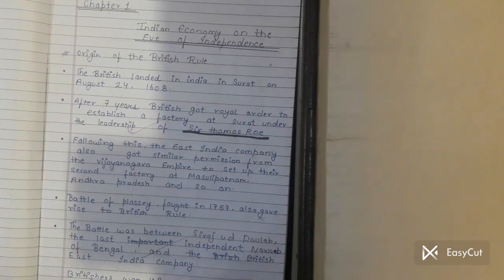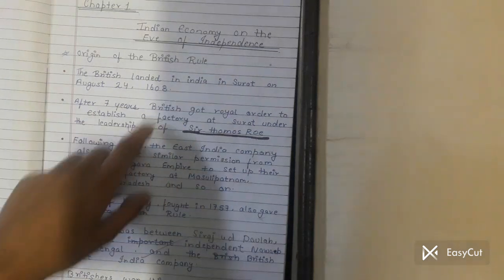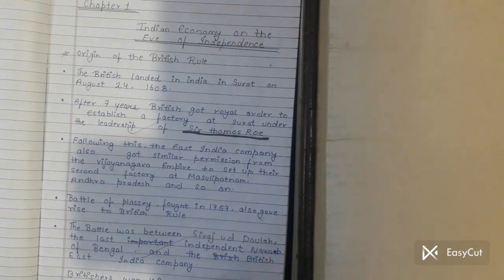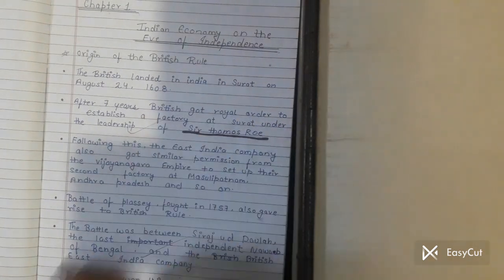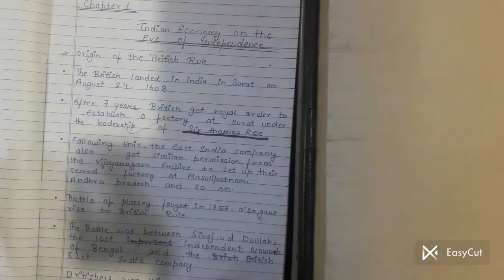This was under the leadership of Sir Thomas Roe. In the 17th century, what the British established in India was called a factory.